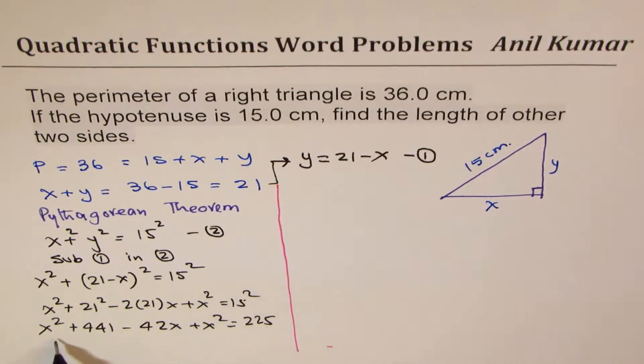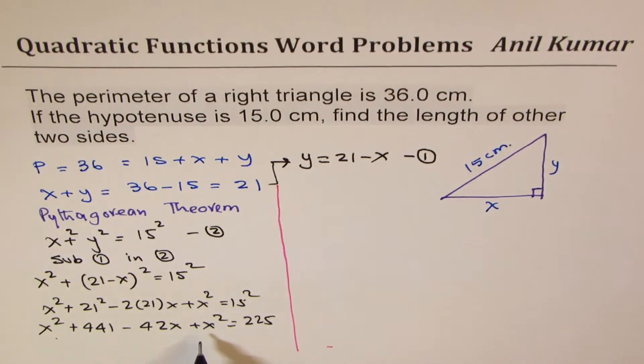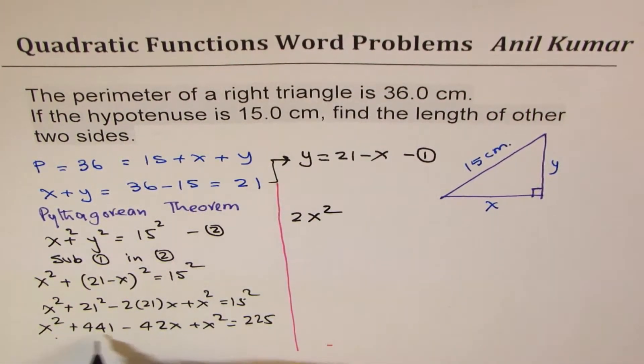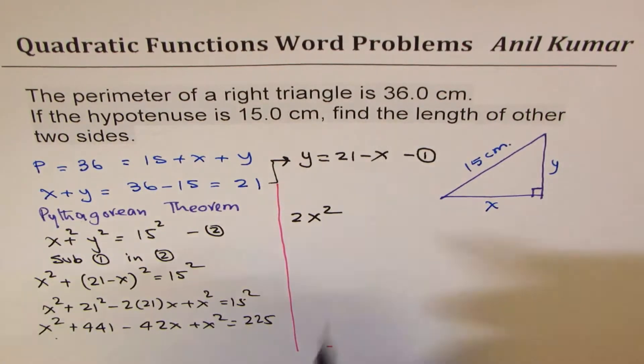X square plus X square is 2X square, and then we have minus 42X. 441 minus 225 equals to 0.